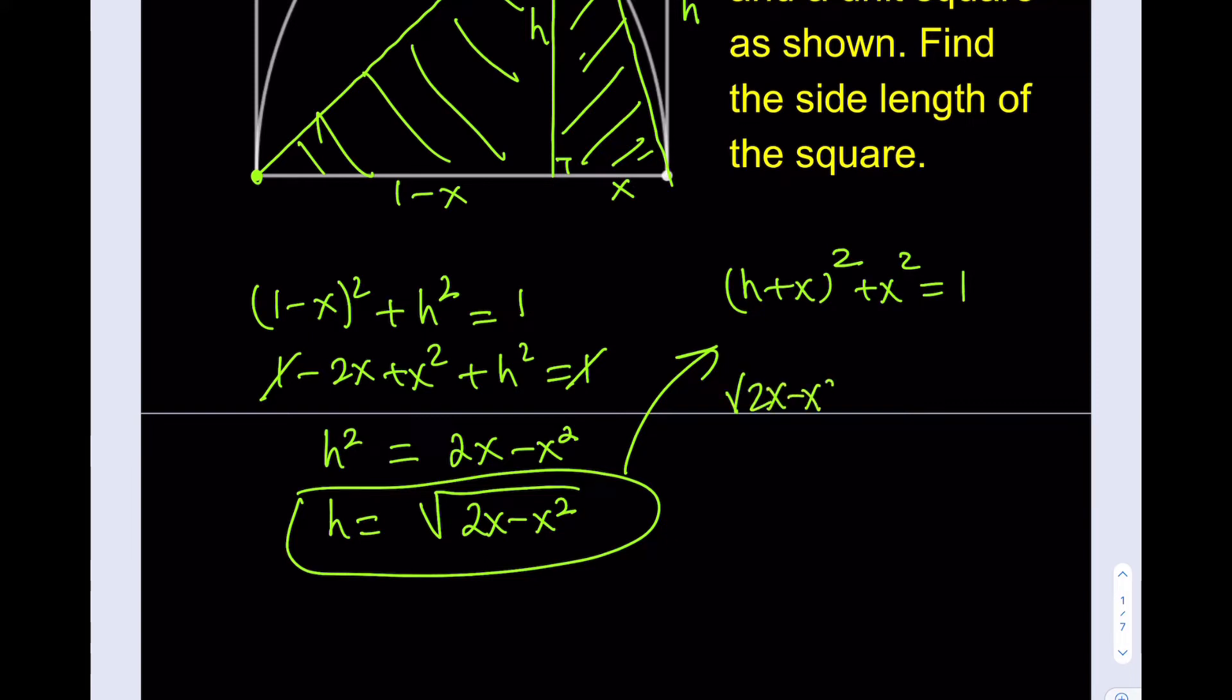Let me do that. This is going to be the square root of 2x minus x squared plus x, and the quantity will be squared, plus x squared is going to equal one. Now one of the things I can do is obviously isolate the radical, which is going to be a good idea.